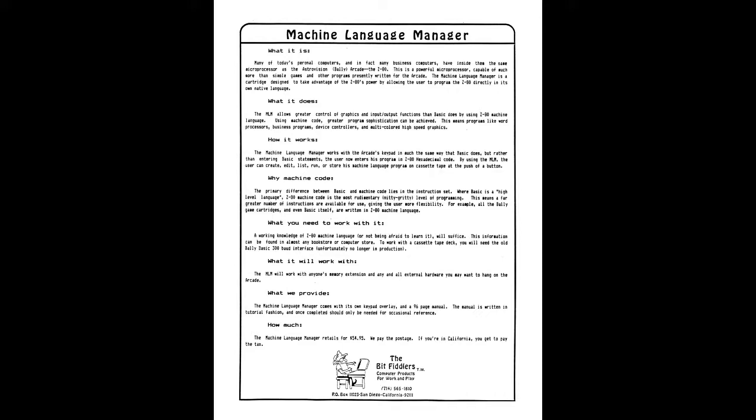What this allows you to do is create, edit, list, run, or store machine language programs on cassette tape at the push of a button. This cartridge uses the 300-baud interface. I've been using it over the past few days and it works pretty well — programs save rather quickly because they're pretty small. To work with it you need to know Z80, although you can get started just by using the manual. There are examples you can type in from the really well-done manual.